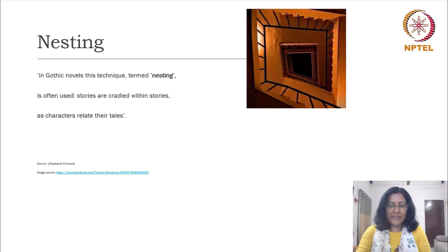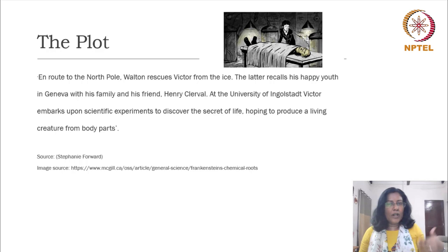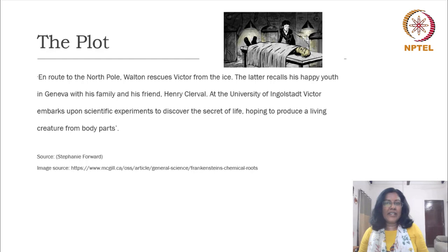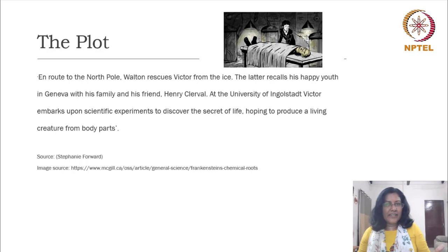So what is the story? The story is told by Robert Walton primarily and he is en route to the North Pole to find the Northwestern Sea Passage. While he is traveling, Walton rescues Victor Frankenstein from the ice and Victor recalls his happy youth. He tells Walton about his childhood, about his youth in Geneva with his family and his friend Henry Clerval. So you get to know about Victor through the eyes of Walton in a letter that he writes to his sister Margaret.